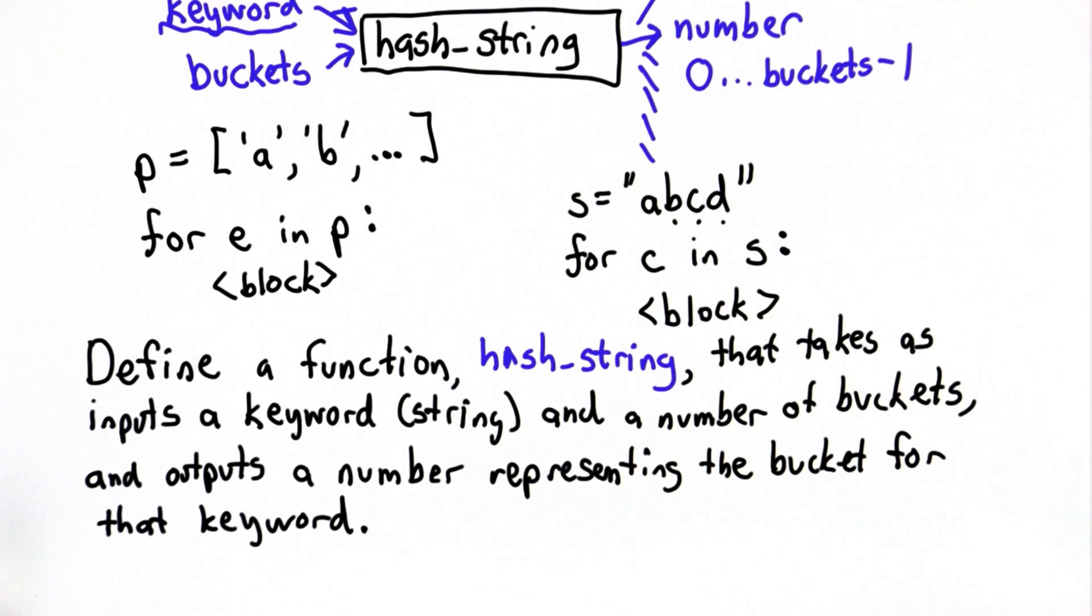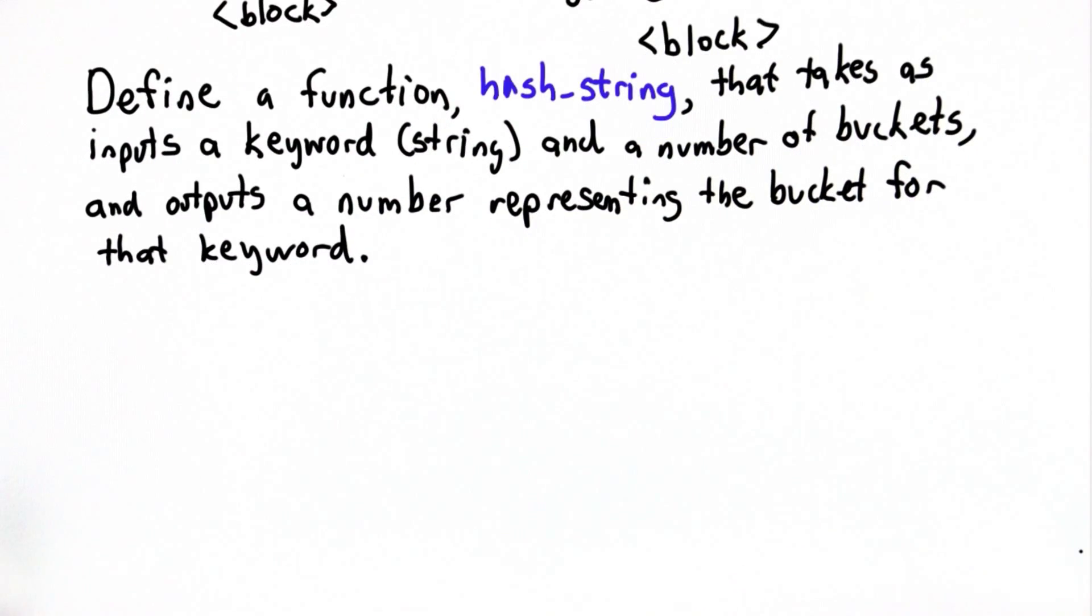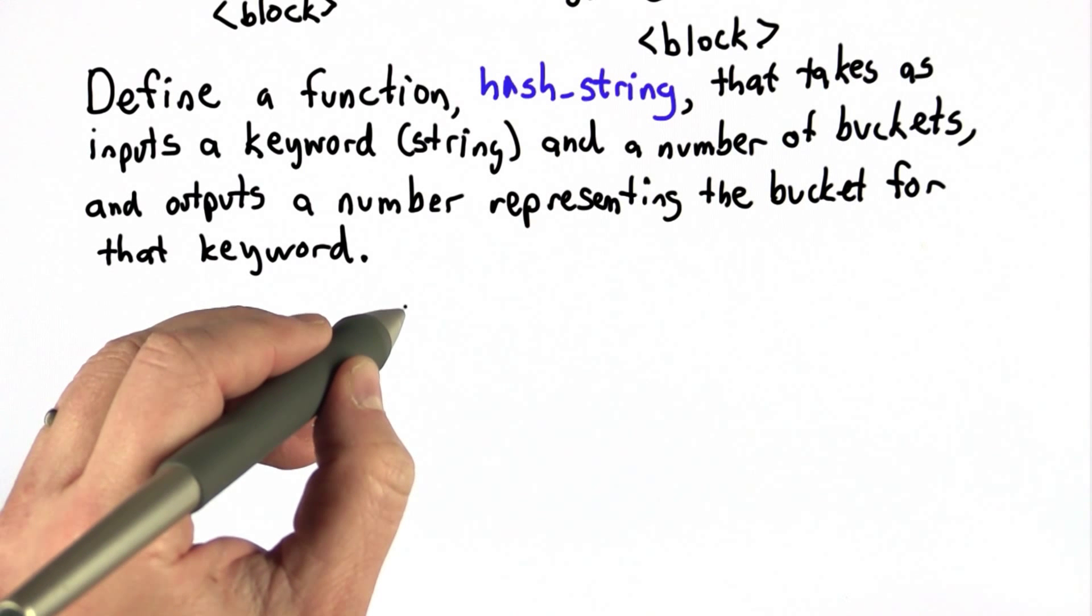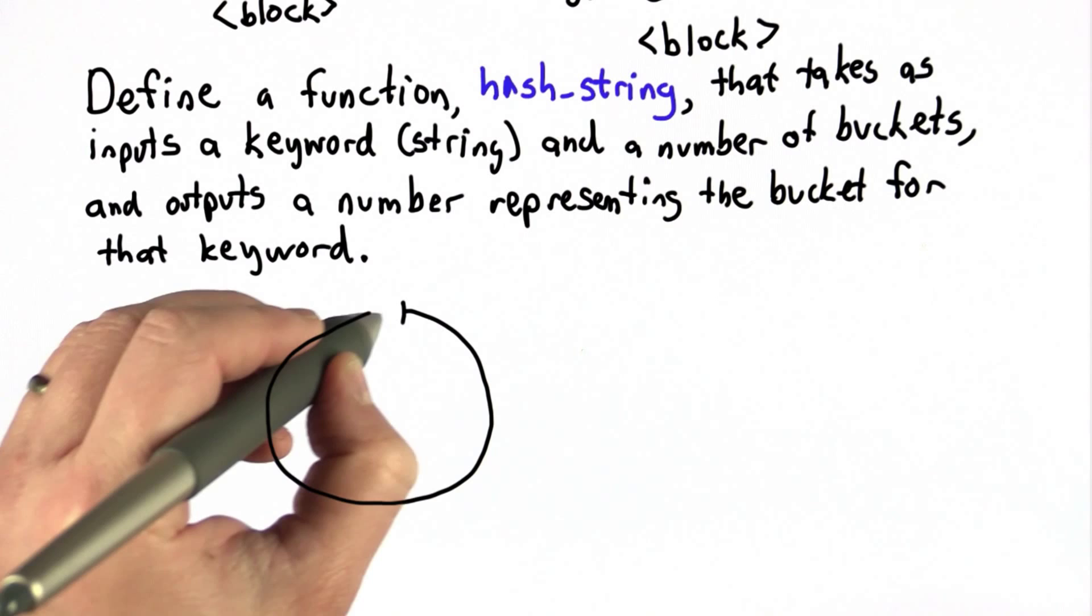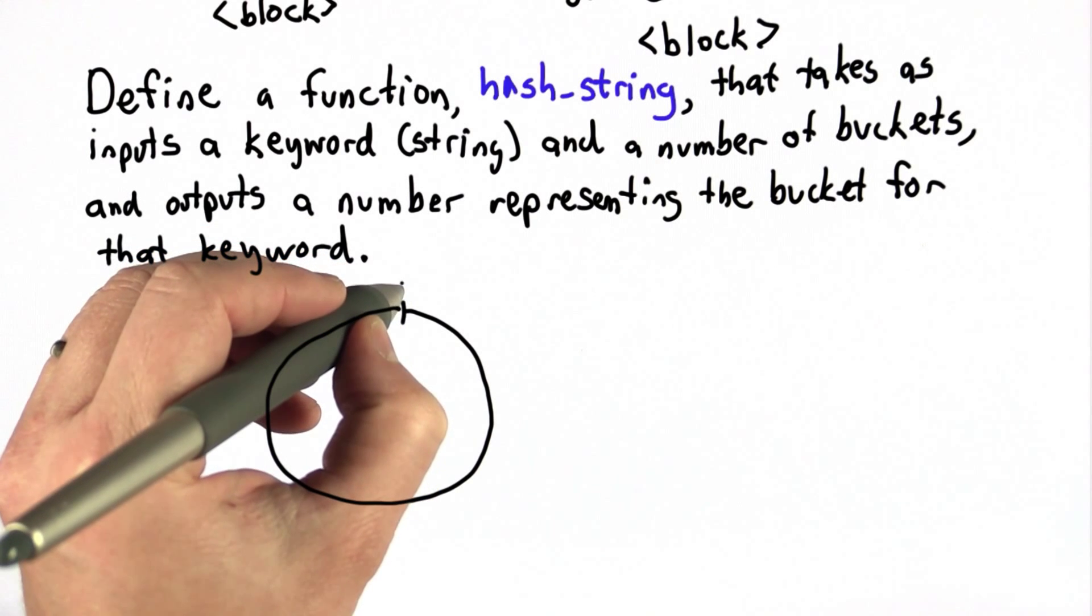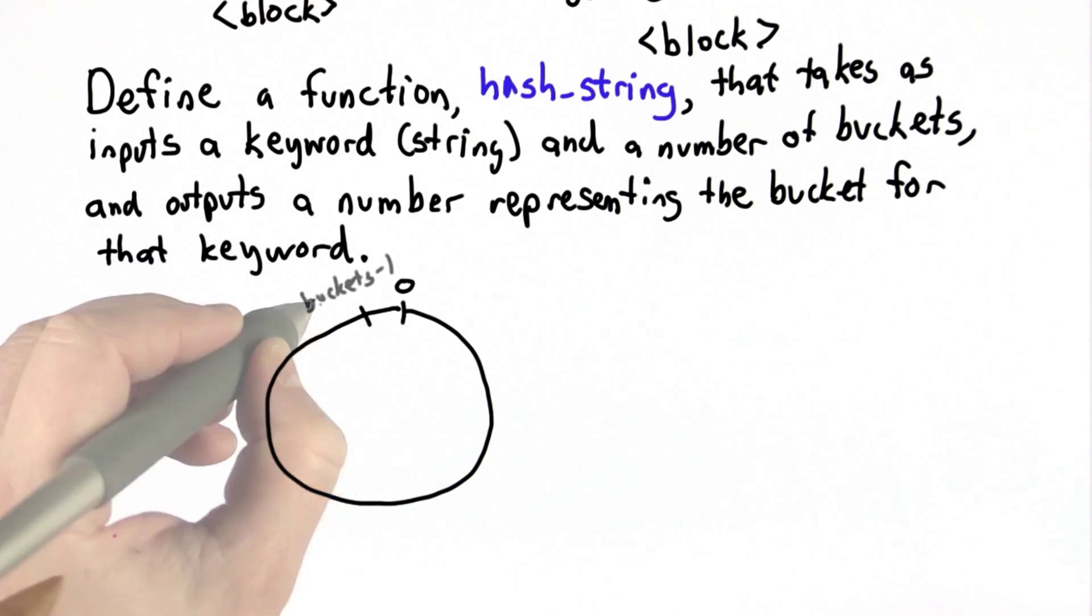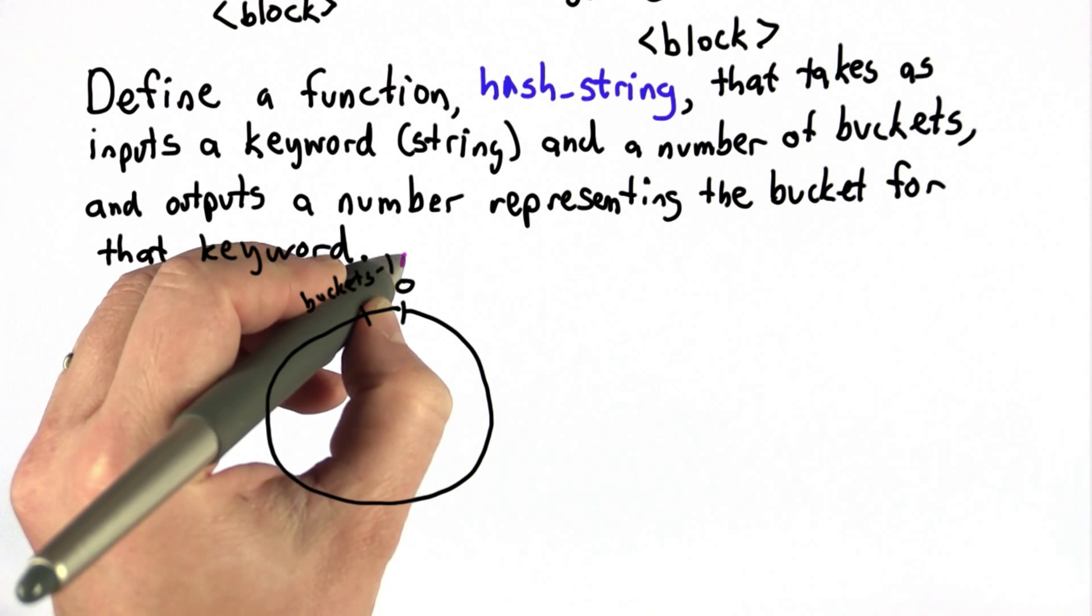There are lots of different ways to do this, so we're going to specify exactly what you should do. What we want to do is make the output of hash_string a function of all the characters, and we can think of that with modular arithmetic. If we have a circle which is the size of the number of buckets, this is going to go from 0 to the buckets minus 1. What we want to do for each character, we're going to start at 0.